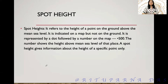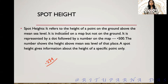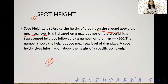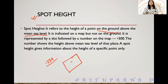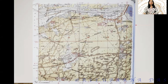In a topographical map you may have seen somewhere written in black color a dot with a value, like 234 or something — this is known as the spot height. It refers to the height of a point on the ground above the mean sea level. Sometimes this spot height helps us find the highest point of a region. For example, if they ask you to find the highest point of a topographical map, the spot height can help you — for instance, dot 183.